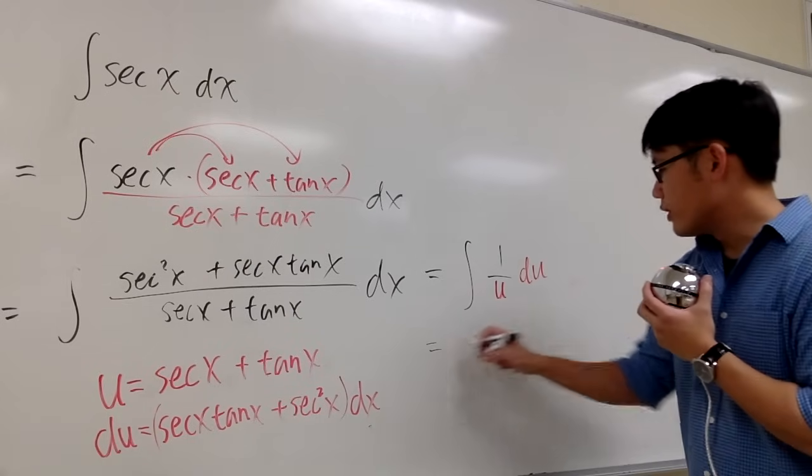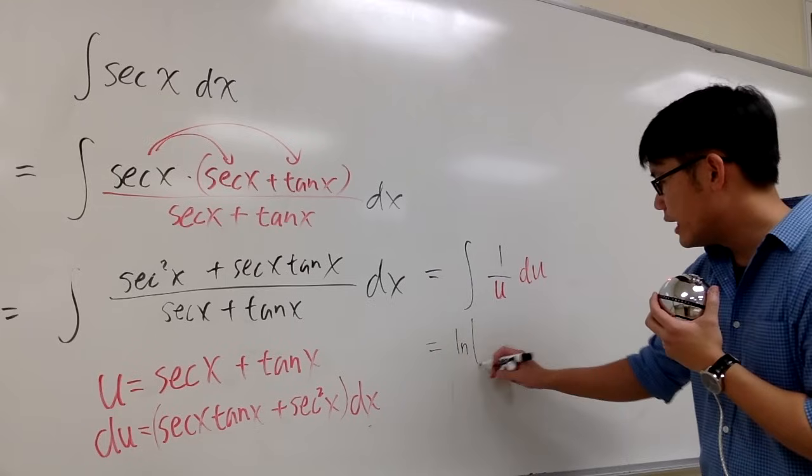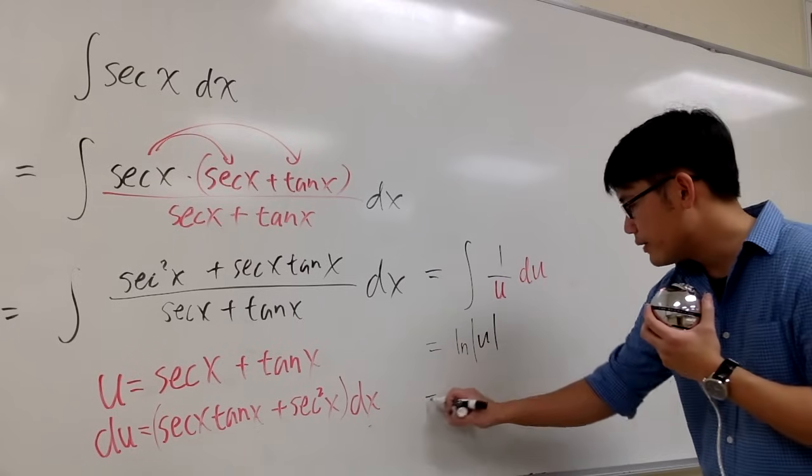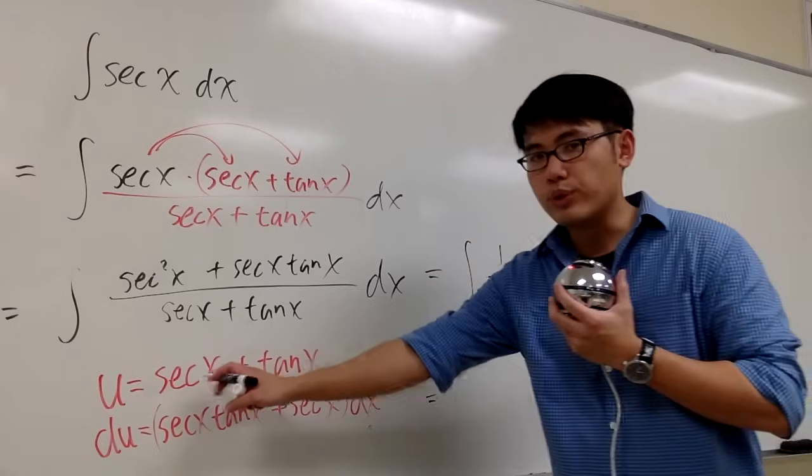And the integral of 1 over u du is of course ln absolute value of u. And finally, we can just plug in u is equal to that,